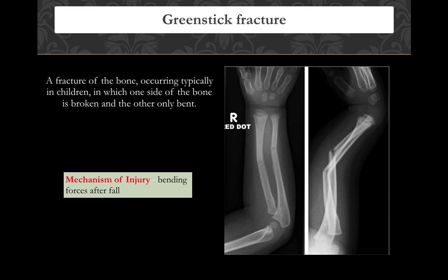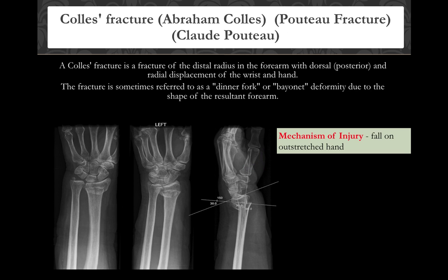Greenstick fracture occurs in children. It is an injury where one cortex breaks and the other cortex bends. This is a common pediatric fracture.